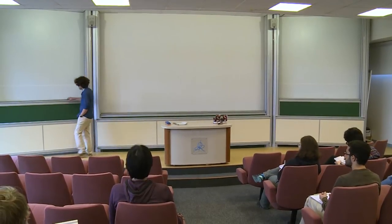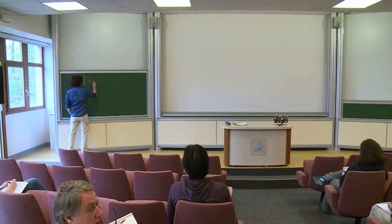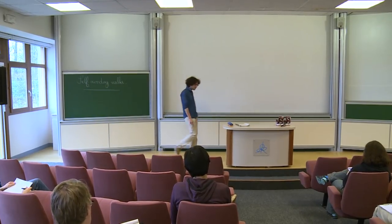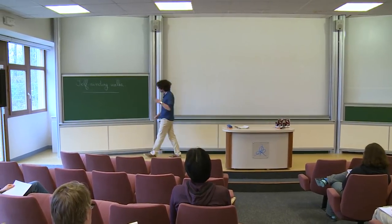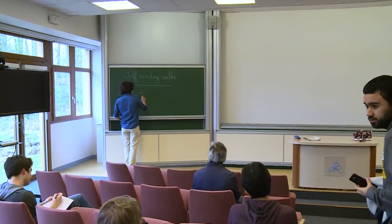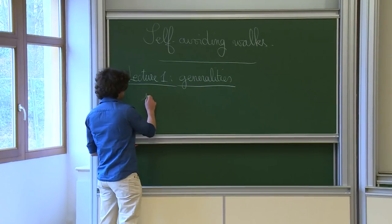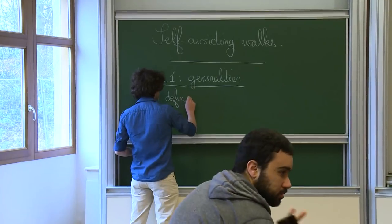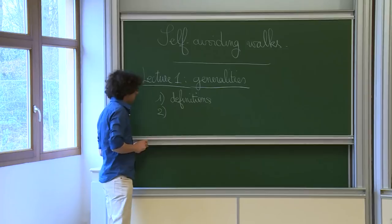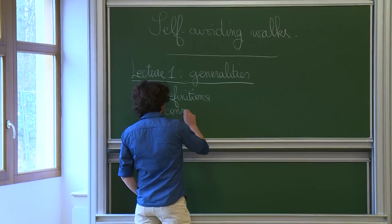Thank you very much for coming. This is going to be a four-lecture class on self-avoiding walks. Before I dive into the subject, let me tell you how it's organized. In the first lecture today, it's mostly going to be generalities — a few things we really need to discuss before we start, in particular the definitions of the objects we will look at. Then quickly a quantity called the connective constant will appear, which we'll need to study in some detail.